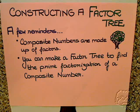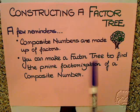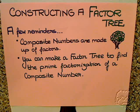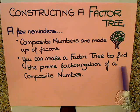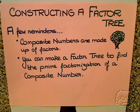A few reminders before we start. Composite numbers are made up of factors — that's why they're different from prime numbers. You can make a factor tree to find the prime factorization of a composite number.